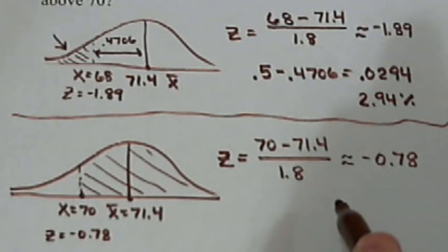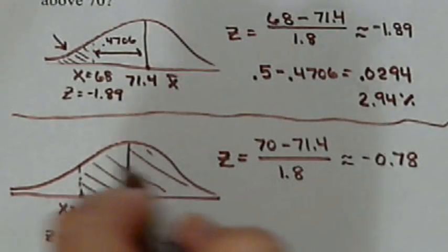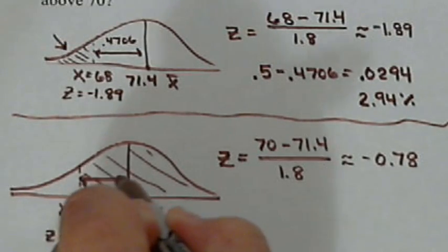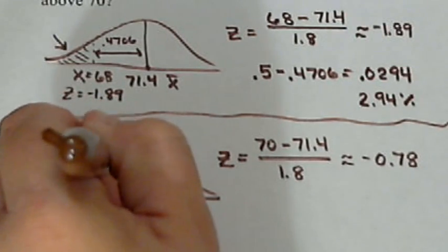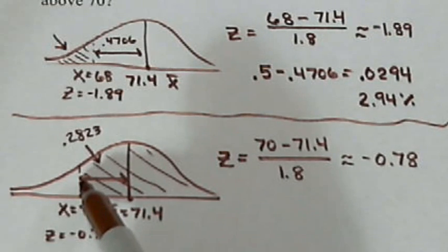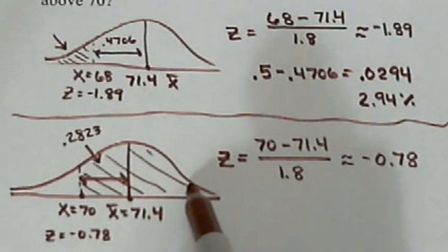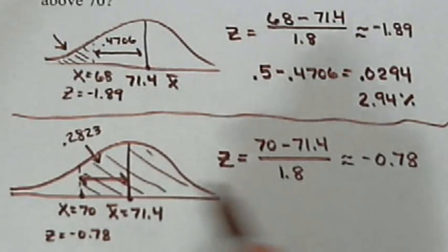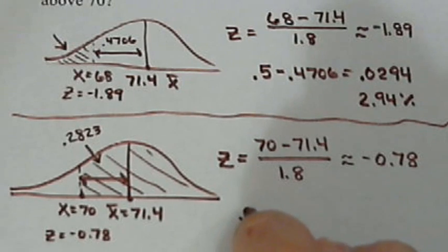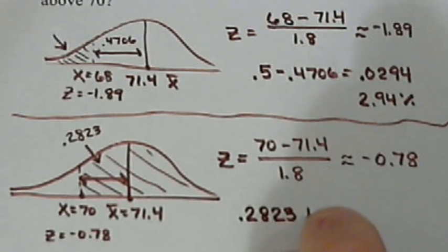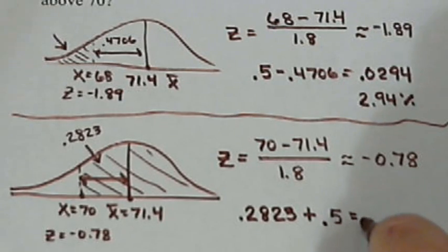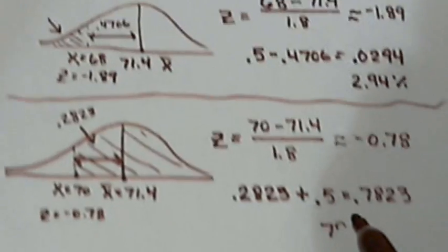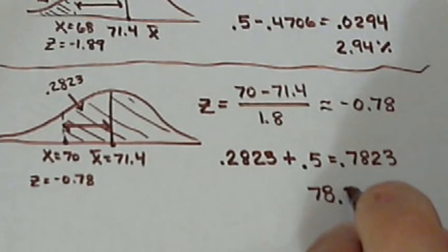Now, if we look up on our table for negative 0.78, we get a percentage of 28.23. And remember, that's the percent from this Z value back to the middle. But we really want all of this over here. So this is another 50%. So in this case, we're going to take our 0.2823. And this time, to get all the way to the edge, we're going to add this 50% to it. So we get an answer of 0.7823, which is 78.23%.